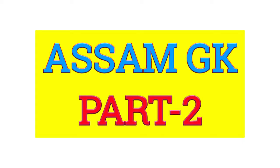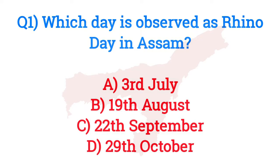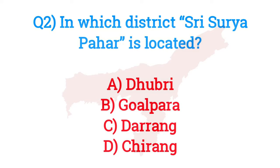Question number one: Which day is observed as Rhino Day in Assam? The answer is option C — 22 September. Question number two: In which district is Sri Surya Pahar located? The answer is option B — Goalpara.